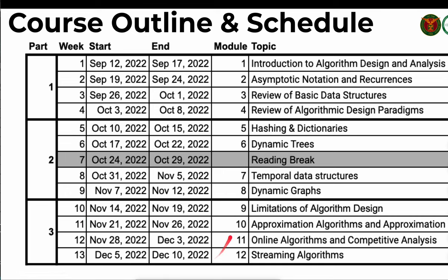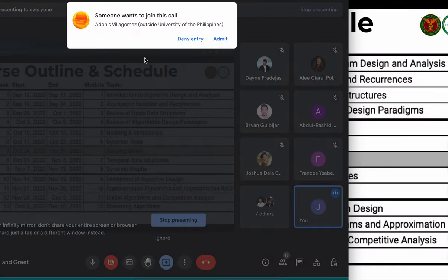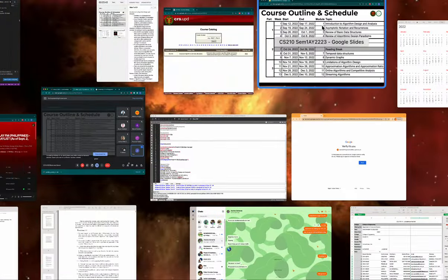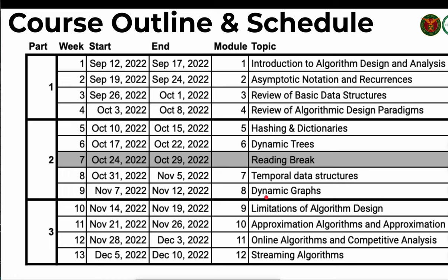Part 3 is for advanced algorithm design. We start with limitations of algorithm design in modules 10, 11, and 12 — limitations not common in earlier discussions. This is where lower bound arguments come in. Lower bound arguments claim that no better algorithm exists for a particular problem, and these are used in computational complexity. Computational complexity organizes easier problems relative to harder ones.